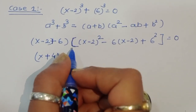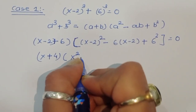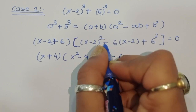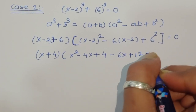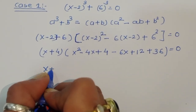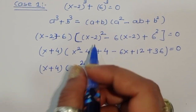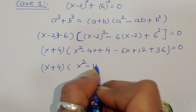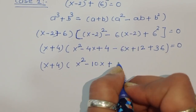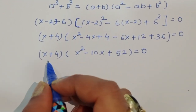So we get (x plus 4) times [x² minus 4x plus 4 minus 6x plus 12 plus 36] equals 0. Expanding the bracket: x² minus 10x, and 4 plus 12 plus 36 equals 52. So we have (x plus 4)(x² minus 10x plus 52) equals 0.